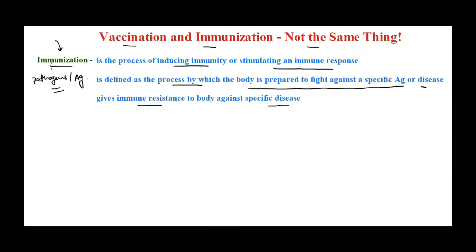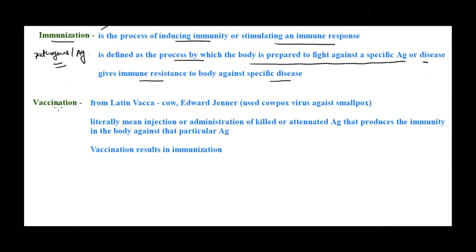This immunization can be acquired by different means. Vaccination is one of the ways to acquire immunization. Let's first see the definition of vaccination and then we'll get a clearer picture, and then we'll move on to types of immunization and see where exactly vaccination fits in.